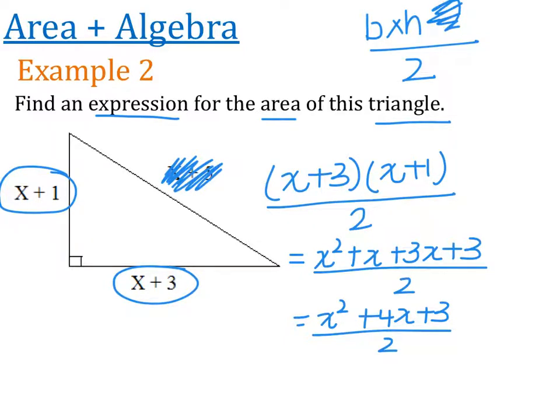If you don't like the way that that one looks, you could also write this as 1 half times by everything that is in this bracket. That is also an acceptable answer. And if you really felt like it, you could also write it as 1 half x squared plus 2x plus 3 halves.